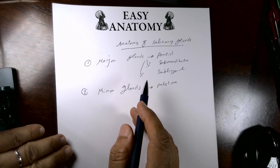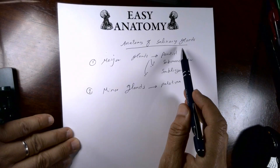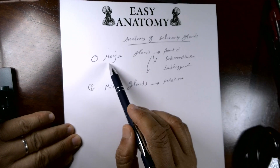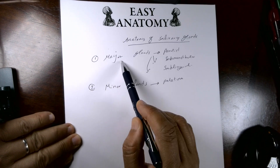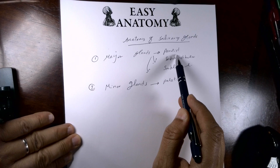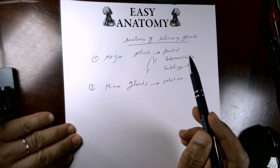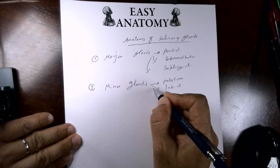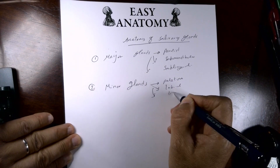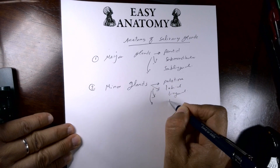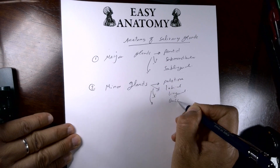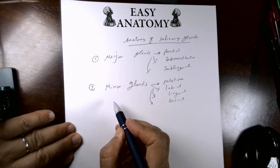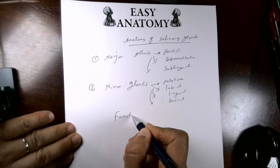Today I'm going to talk about the anatomy of salivary glands. We have three major salivary glands: parotid, submandibular, and sublingual. Minor glands include palatine, labial in the lips, lingual in the tongue, and buccal.